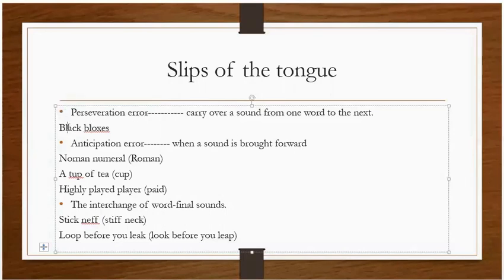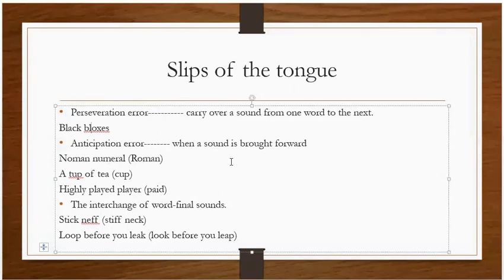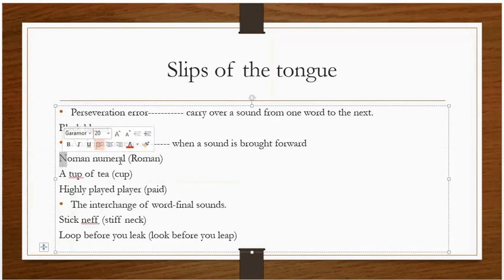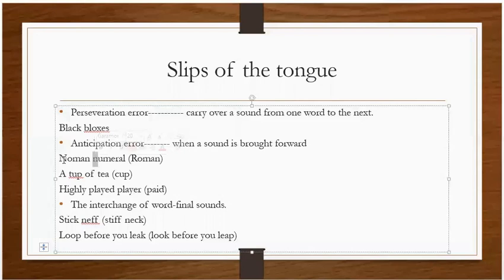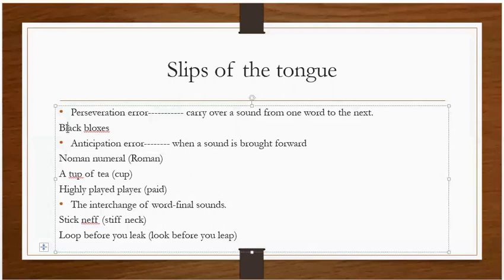The next is an anticipation error. In preservation, we took a sound from a beginning word to the next word. But in an anticipation error, we bring a sound forward — for example, 'nomen numeral' instead of 'roman numeral'. The sound from the second word is anticipated and placed in the first word.